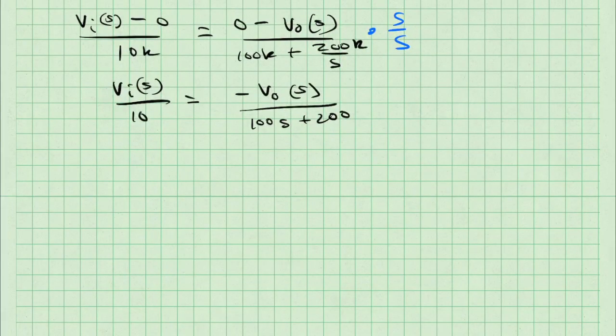When I do so, I get VI of S over 10 is equal to negative V0 of S times S over 100S plus 200. I've dropped the K's here because I can see that the kiloohm part is going to cancel.